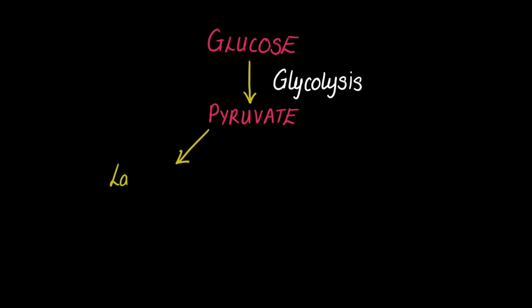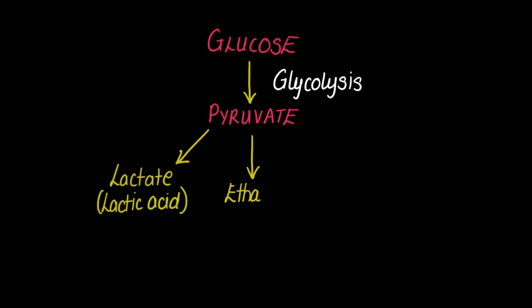By means of review, let's look back at glycolysis and remind ourselves how glucose was broken down into pyruvate, and that this required no oxygen and generated two ATP.